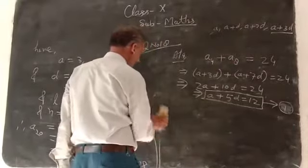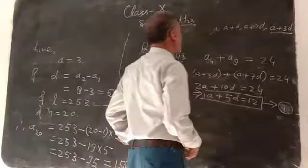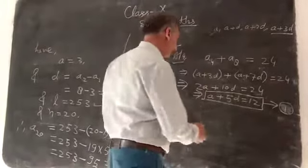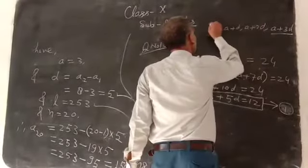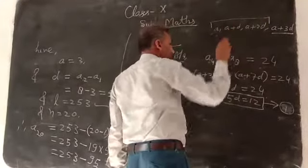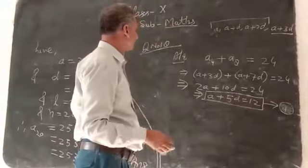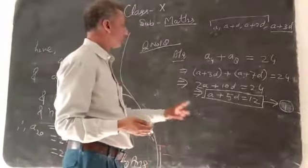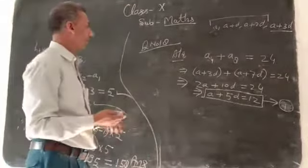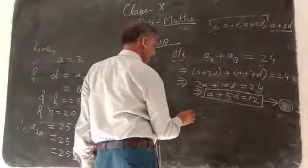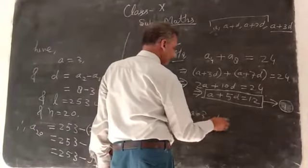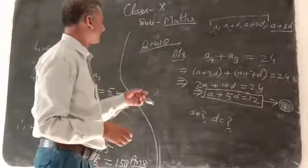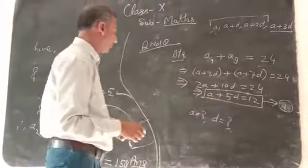When you have another condition, according to the second condition also you will make an equation. When you have two equations, you will solve two equations and A and d will be found. So try to solve question number 18 at home.